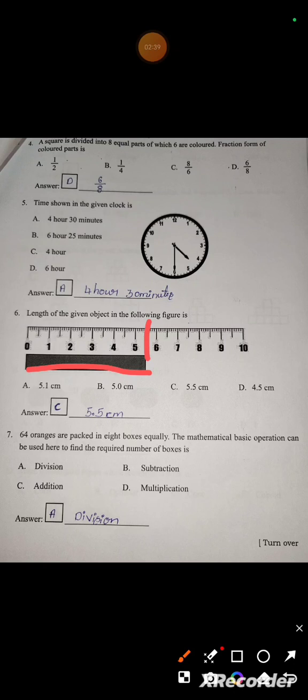64 oranges are packed in 8 boxes equally. The mathematical basic operation to find the required number of boxes is? Total oranges are 64, packed in 8 boxes equally. 64 oranges divided into 8 boxes, so it will be dividing. Answer is division.